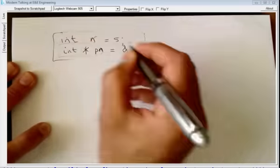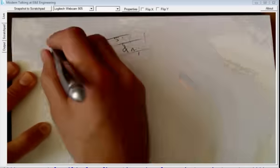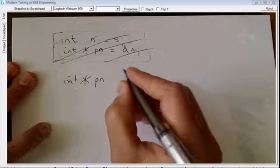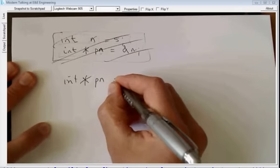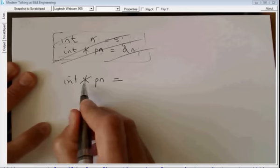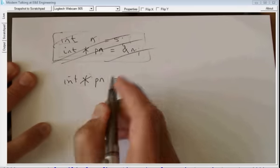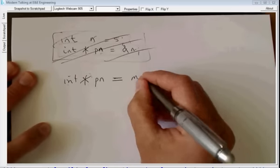The way we do that is we make a pointer. So just forget about that for a second. Int pn is equal to. So this is a pointer to an integer type. The name of the pointer is pn and then we use a function called malloc.